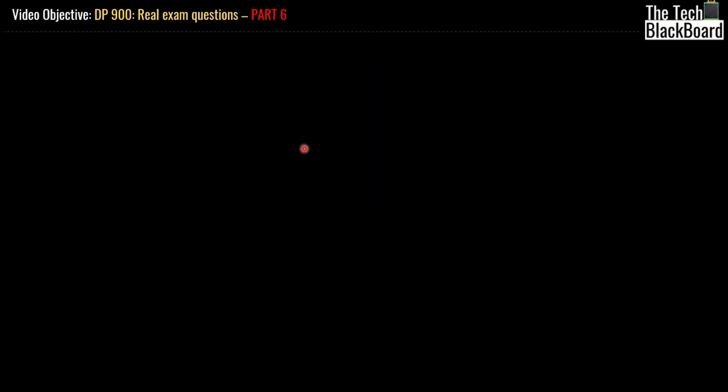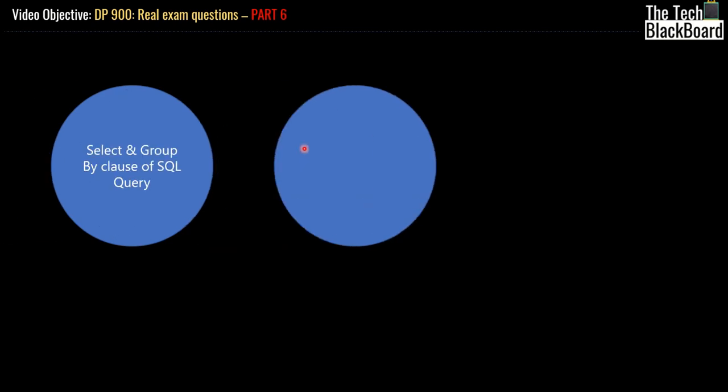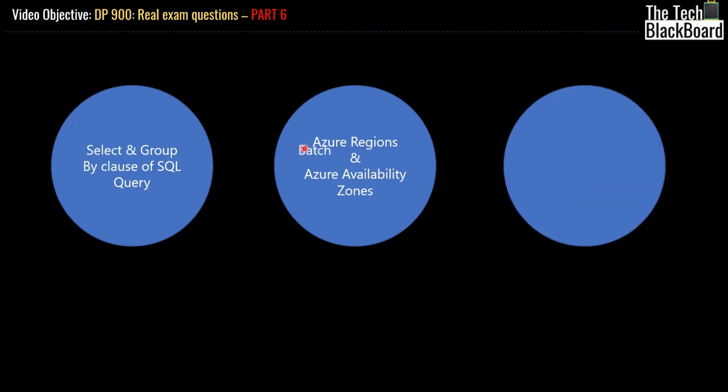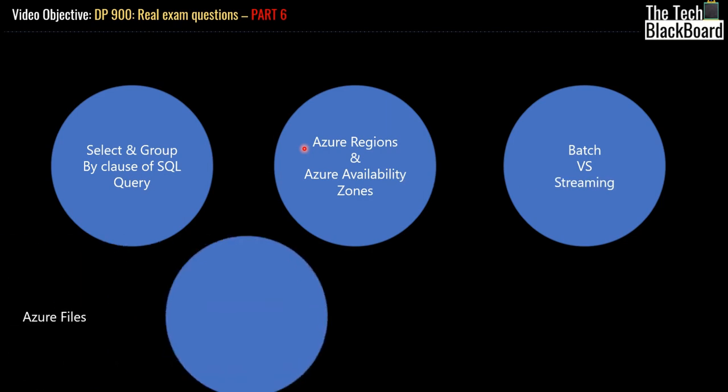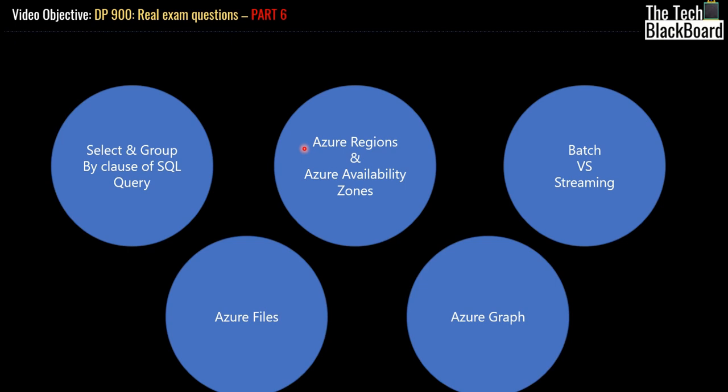I hope that you thoroughly enjoyed Part 6. In this part, we discussed a lot of great concepts on Azure data and related services. We started to discuss with SELECT and GROUP BY clause of Azure SQL query. We also discussed upon Azure regions and how Azure availability zones provide redundancy or availability. Then we discussed upon Azure Batch and Azure real-time processing or streaming processing. We also discussed upon Azure Files, when to use them and what capabilities do they provide. And then we discussed upon Azure Graph and how to use the Azure Graph services, use cases for it, and a lot more.